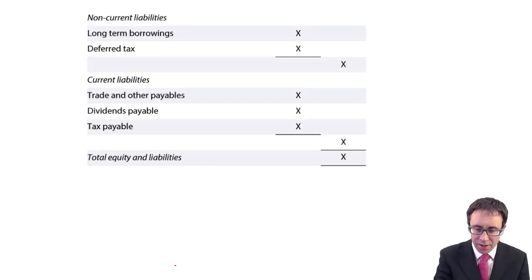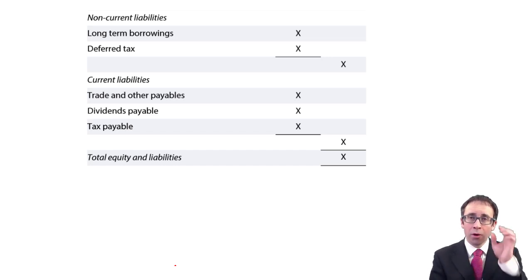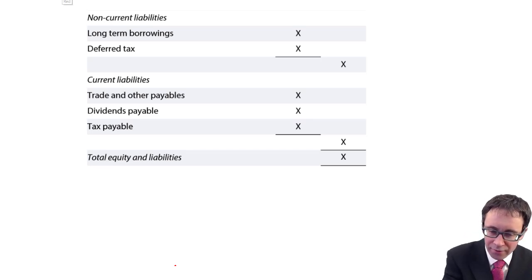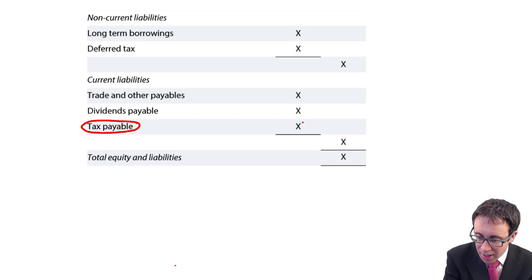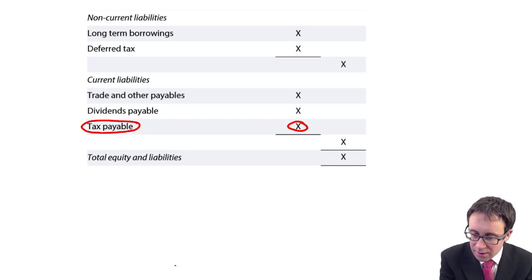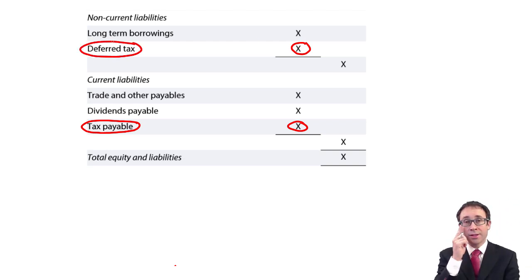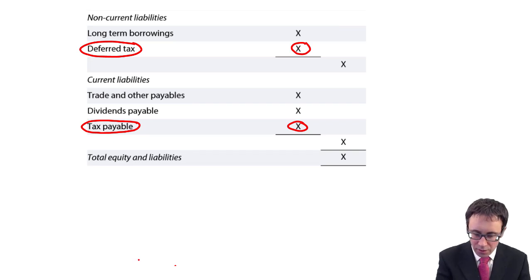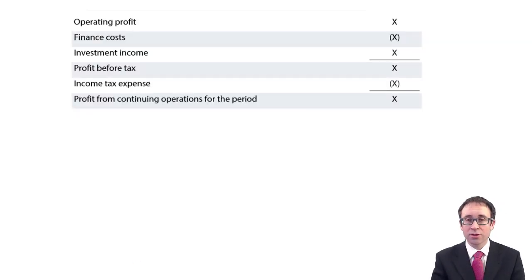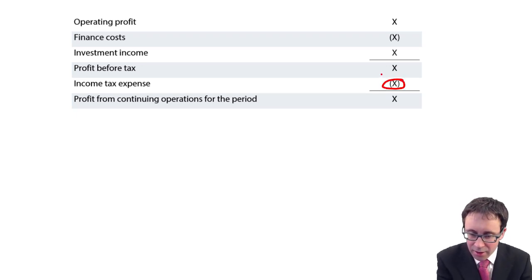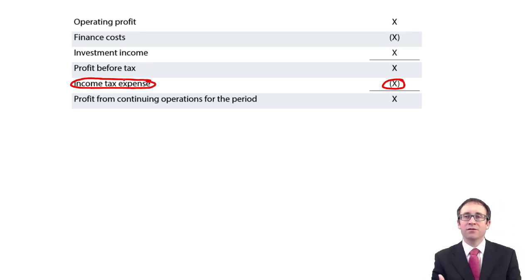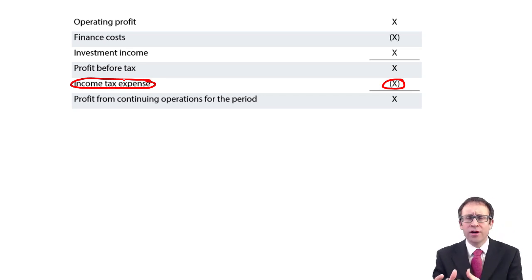If you look at your published company accounts, from the statement of financial position, the balances that we're looking at are your tax payable balance within current liabilities, and then your deferred tax balance within your non-current liabilities. We will need to be able to go through and calculate those figures. Also, if you look at the statement of profit or loss, you have your operating costs down to your profit before tax, and then we need to be able to calculate that income tax expense figure. That income tax expense figure will be made up partly of current tax expense and a deferred tax expense as well.